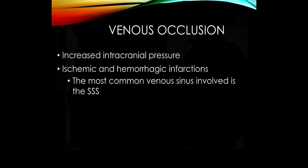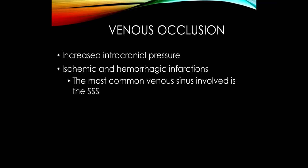With a venous occlusion like this, we get increased intracranial pressure. If arterial flow cannot efficiently drain into the venous system, pressure backs up and we get ischemic infarcts — meaning there isn't enough arterial pressure to oxygenate certain areas of the brain. Because of the high pressure, we can also get hemorrhagic infarcts.